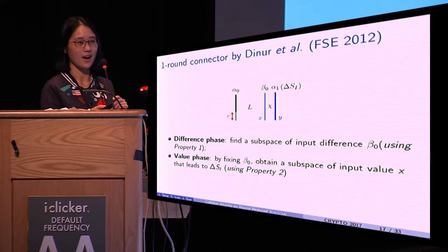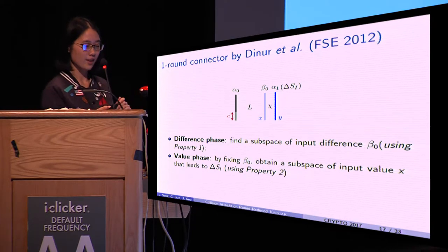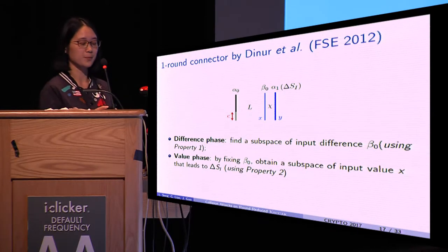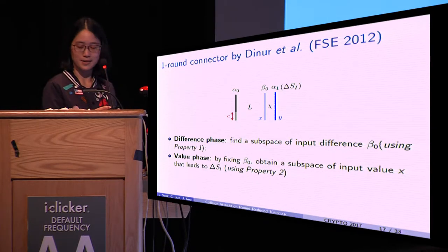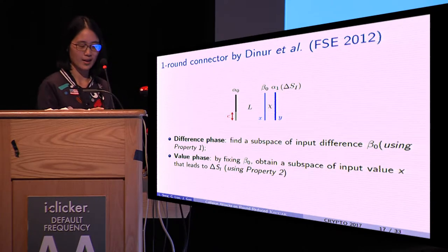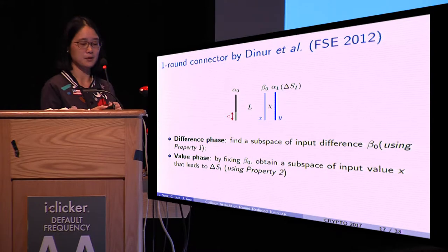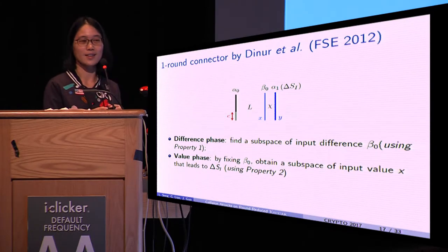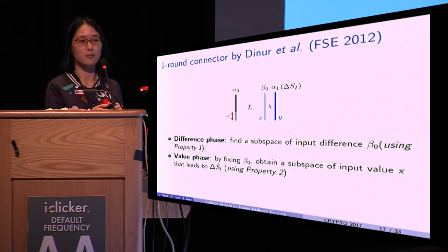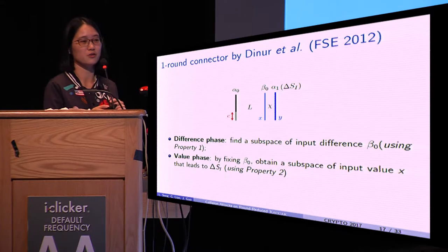Then in the difference phase, one finds a subspace of input difference β_0. And in the value phase, by fixing β_0, one obtains a subspace of input values that lead to ΔSI.